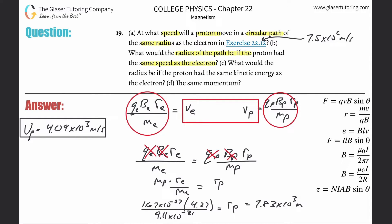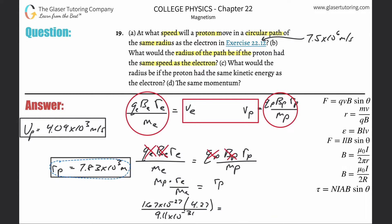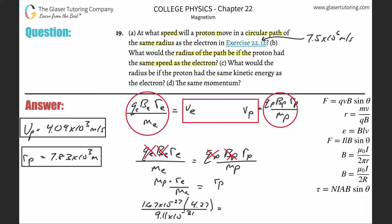The radius is significantly larger — more than a thousand times larger. That's because the mass of the proton is more than a thousand times larger than the electron. It has more inertia. So that takes care of Part B.